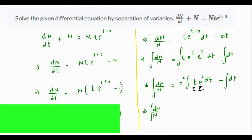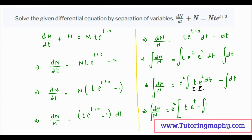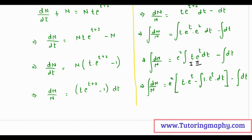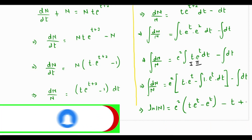The left side remains dn over n. e squared stays out. Applying integration by parts: the first term gives t times e raised to t, minus the integral of the derivative of t — which is 1 — times e raised to t. The integral of e raised to t is e raised to t. Minus the integral of dt. Integrating everything: the integral of dn over n is the natural log of n, e squared stays out, giving t times e raised to t minus e raised to t, minus t, plus the constant of integration C.